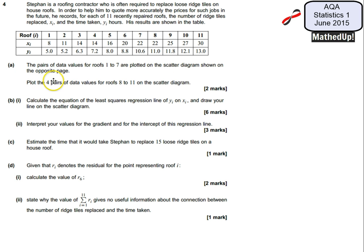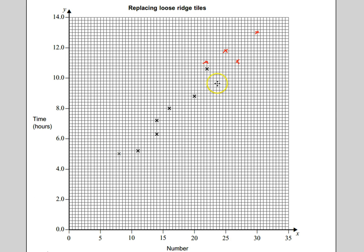So for part A, we're being told that the pairs of data values for roofs 1 to 7 are plotted on a scatter diagram that's on the opposite page. And we need to plot the four pairs of data values for roofs 8 to 11 on the scatter graph. So I did this over here earlier, so you should have something that looks like that.